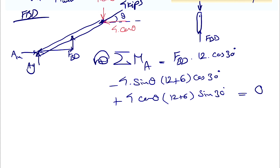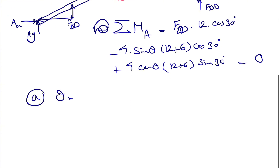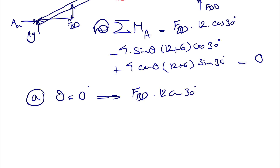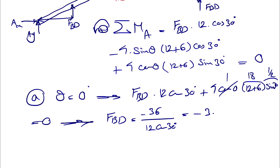For part (a), theta equals zero. We have F_BD times 12 cosine 30°. Since sine of zero is zero, that term drops out. We also have four cosine 0° times (12 plus 6 sine 30°) equals zero. Cosine of zero is one, and 12 plus 6 times one-half equals 15... giving us F_BD equals negative 36 divided by 12 cosine 30°, which equals negative 3.46 kips.